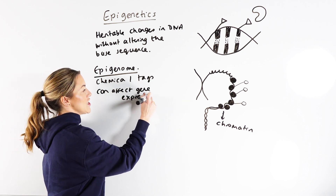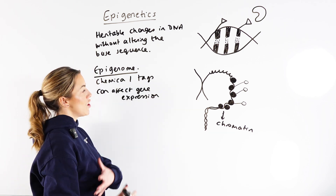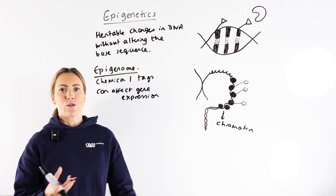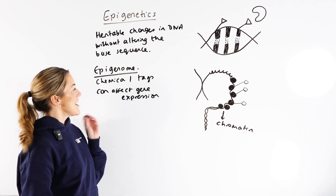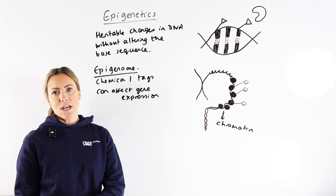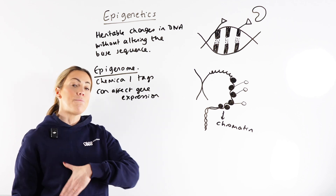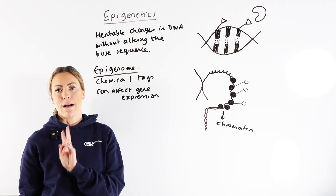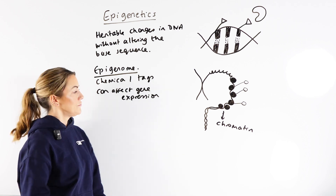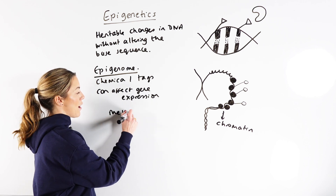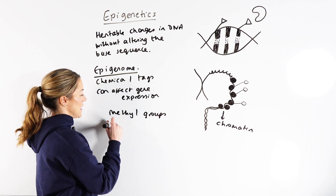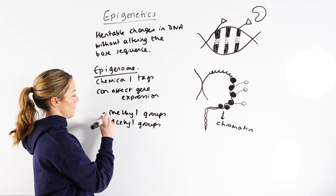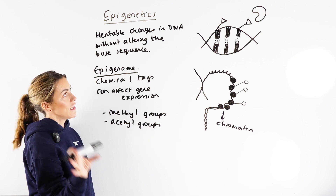So we're not actually changing the DNA base sequence or creating new alleles, but differences in these chemical tags and in the amounts of these chemical tags can affect gene expression — it can lead to gene expression being switched on or switched off. You need to learn about two examples for A-level: methyl groups and acetyl groups. Those are the two chemical tags we need to learn.